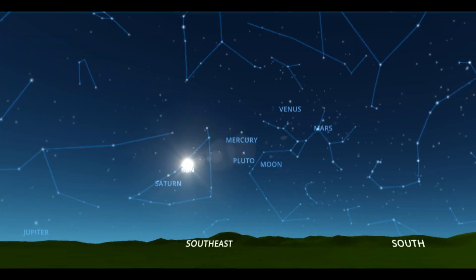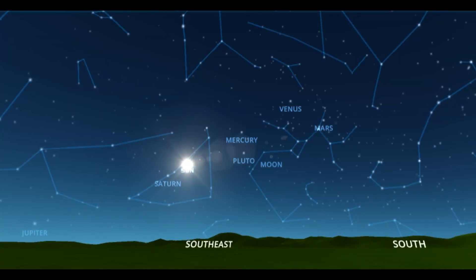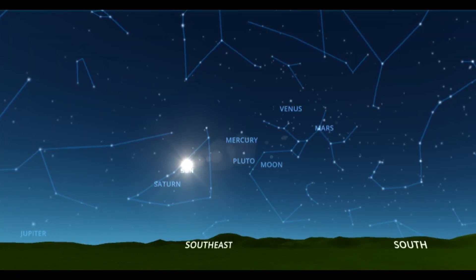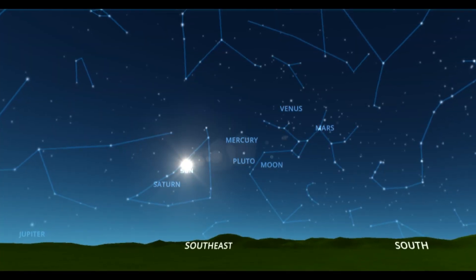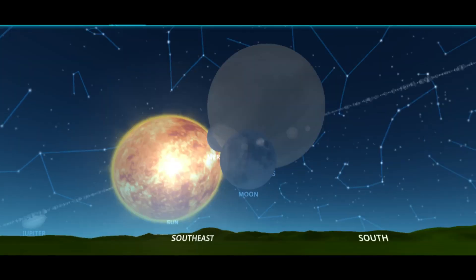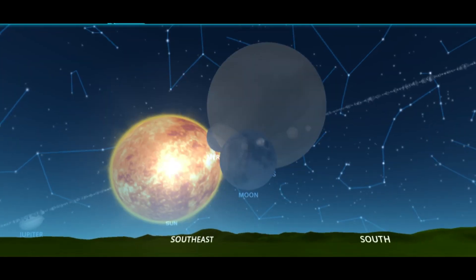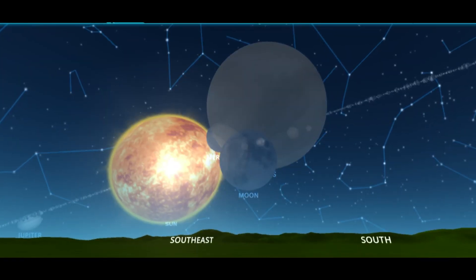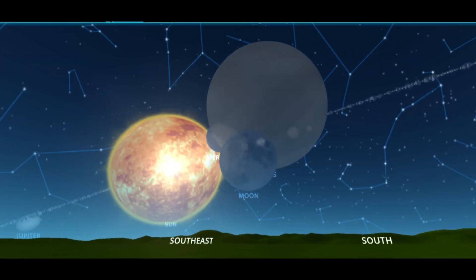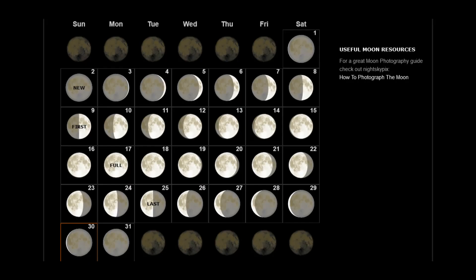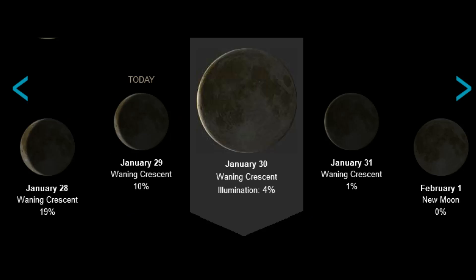Here is a view of the planets from Earth facing the Sun this morning. Now a magnified view of the alignments of the Moon, Venus and Mercury. Tonight, the Moon will be in the waning crescent phase at 4% illumination.